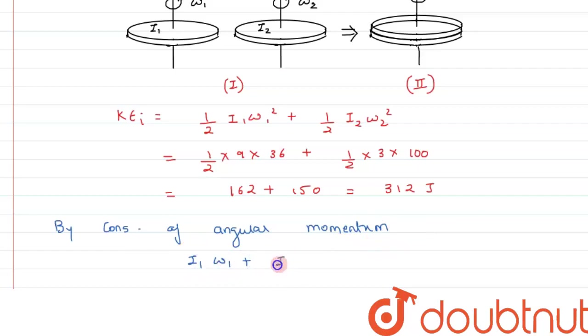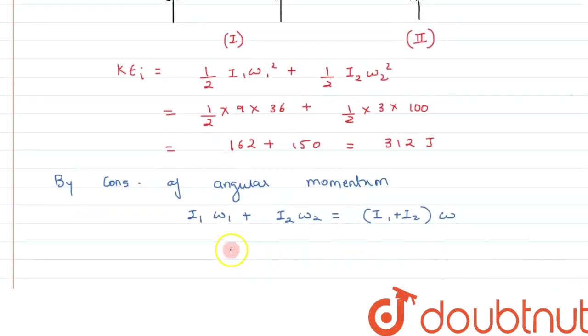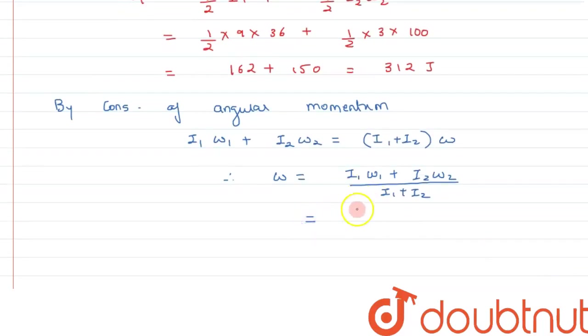We can write I₁ω₁ plus I₂ω₂, that is initial angular momentum, will equal the final angular momentum which is (I₁ + I₂)ω, both are combined moving with the same angular velocity. Therefore the value of ω can be written as (I₁ω₁ + I₂ω₂) divided by (I₁ + I₂). We will calculate its value: I₁ is 9 into 6 plus 3 into 10 divided by 9 plus 3.